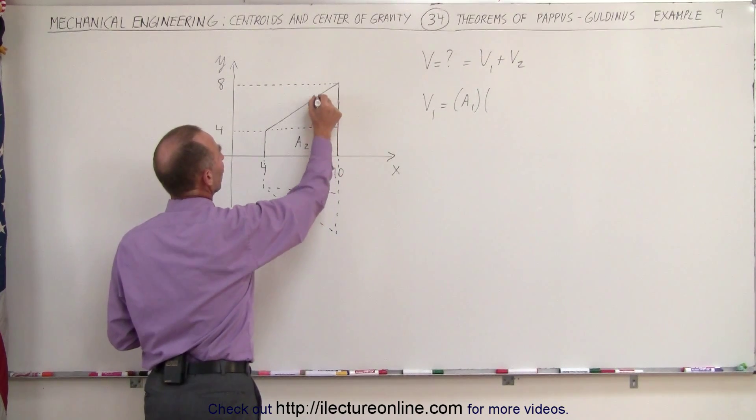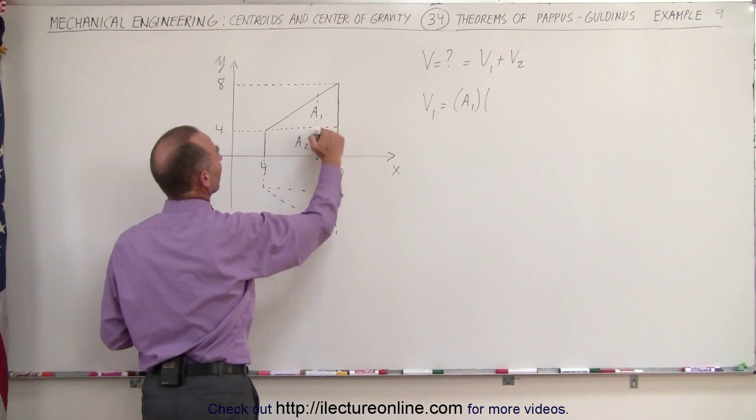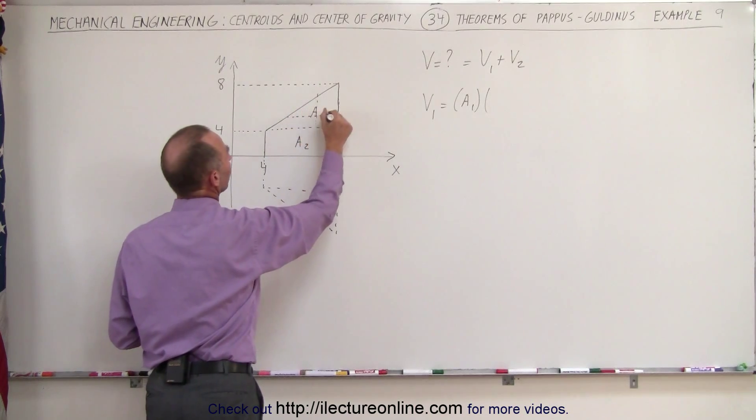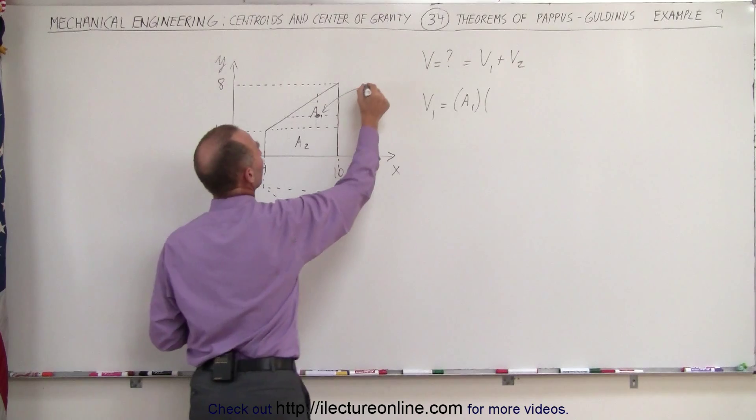Which means one-third the distance from there to there, that would be right about here somewhere, and one-third the distance from there to there, which would be about here somewhere. So the centroid would be right there. Let's call this centroid 1.